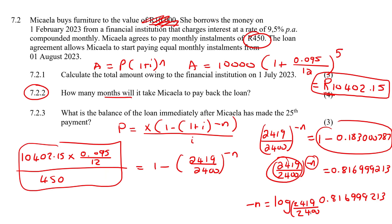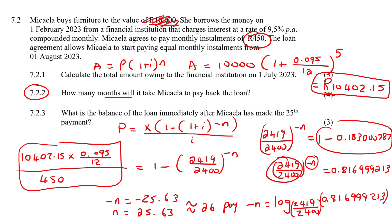So type that on the calculator and that gives us negative N equals negative 25.63, and so N equals 25.63. What does that mean? You can't make 25.63 payments, so she's going to have to make 26 payments, where the last payment will definitely be a little bit less than normal. I'm surprised they didn't add a part 7.2.4 asking us to calculate what that final payment amount would be. We're lucky.